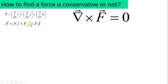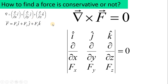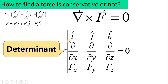To perform the cross product between two vectors, we use the determinant method. Draw a determinant with two vertical lines. In the first row write î, ĵ, k̂; in the second row write ∂/∂x, ∂/∂y, ∂/∂z; and in the third row put the force components Fx, Fy, Fz. This determinant expansion must equal zero.